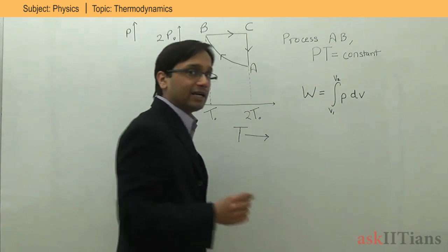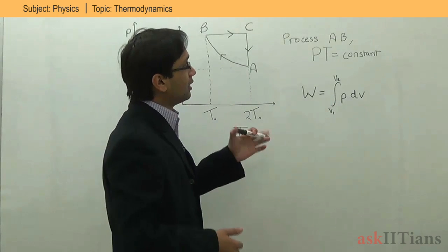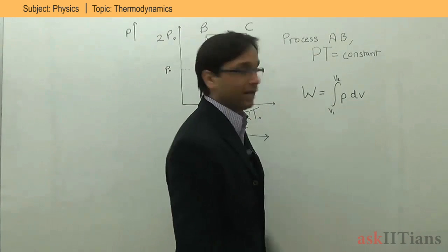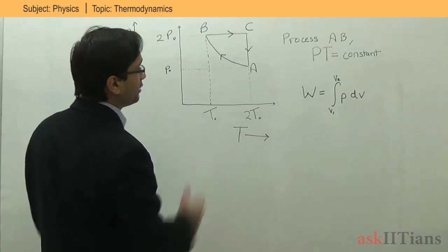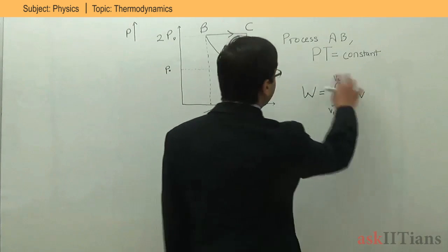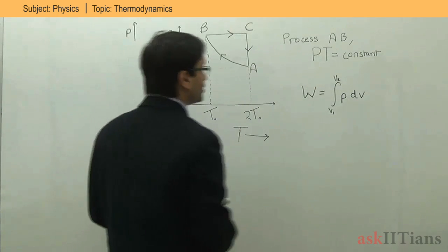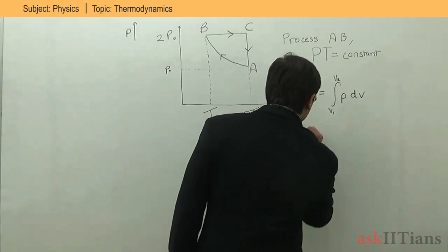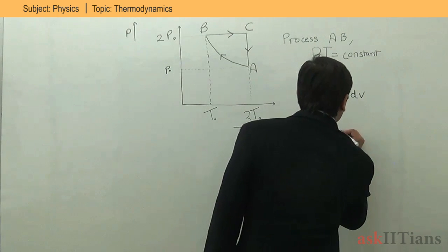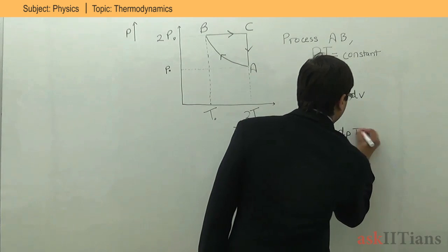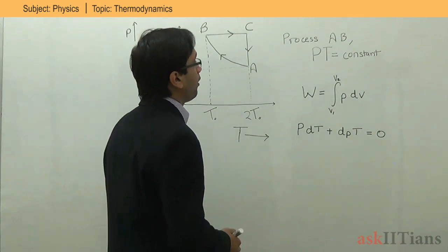First, consider the equation PT = constant. Let's differentiate both sides. We get P dT + T dP = 0, since the differentiation of a constant is zero.